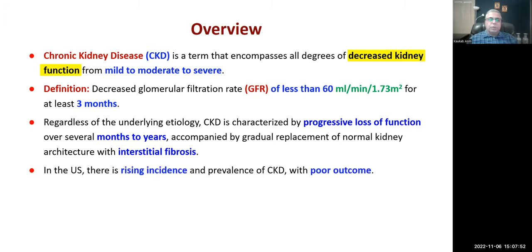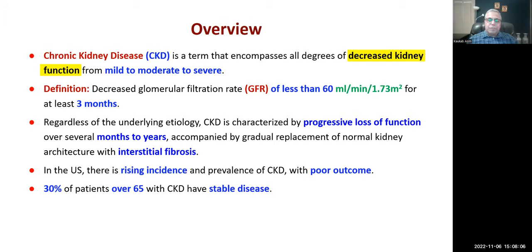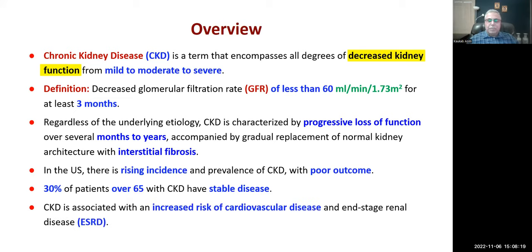Once fibrosis appears and the nephrons are destroyed, there is no going back — it cannot be reversed. In the US, there is a rising incidence and prevalence of chronic kidney disease with poor outcomes, and the same is happening in Saudi Arabia. Thirty percent of people over age 65 have stable disease, meaning their GFR is not falling rapidly. CKD is associated with increased risk of cardiovascular disease and end-stage renal disease.